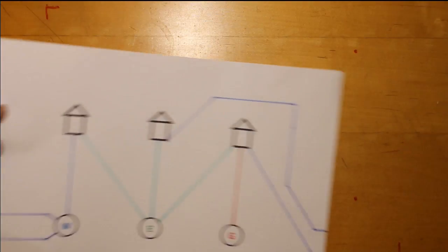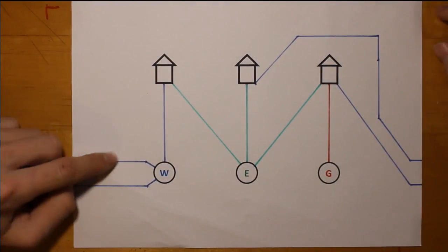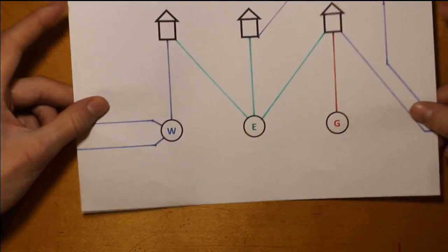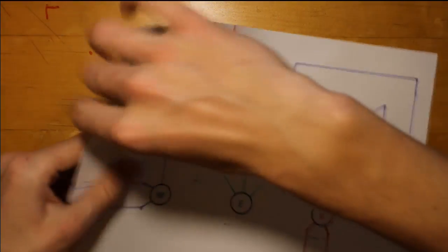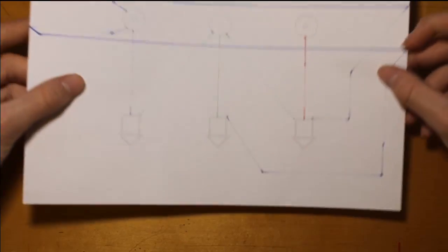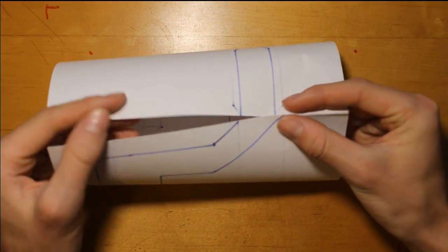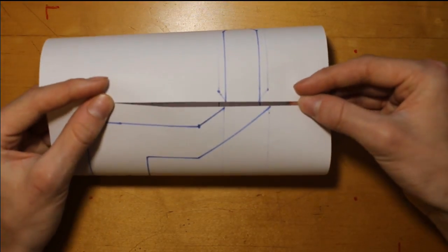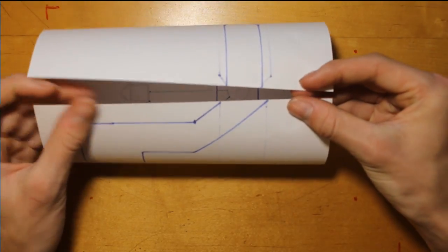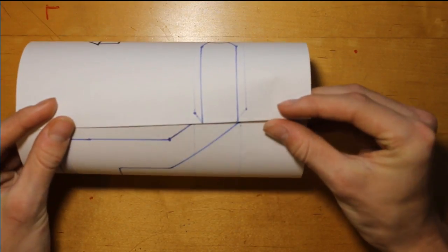To overcome this problem, we'll have to create another route in which the two lines of one of the utilities can run. In this case, it'll be water. Take these two sides of the paper and fold them around. As a result of doing this, not only do we connect the water lines without the need to run them around the back of the paper, but we have also now created a torus.